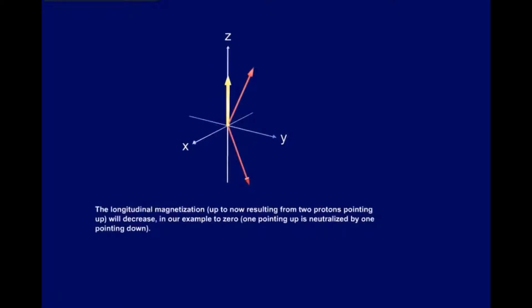The longitudinal magnetization, up to now resulting from two protons pointing up, will decrease. In our example, to zero. One pointing up is neutralized by one pointing down.